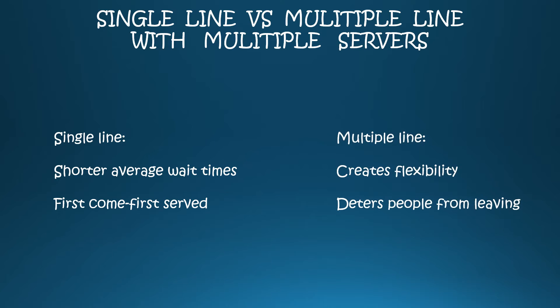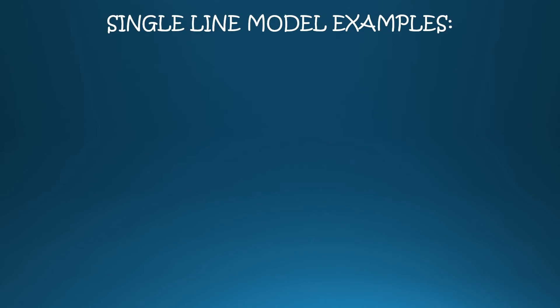Alternatively, a multiple line model with multiple servers creates flexibility. It gives the customer the power to choose which line to be in. It also deters balking, leaving, and choosing not to stand in line at all because they are at the mercy of only one waiting option. Ultimately, a single line with multiple servers is generally the most efficient queuing model to use in business. Next, we'll discuss some single line and multiple line model examples and why a certain business or industry may choose one over the other.